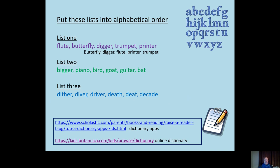Look at list two — a bit trickier because some words begin with the same letter. We've got bigger, piano, bird, goat, guitar and bat. When two words begin with the same letter, we go to the second letter. The answer is bat, bigger, bird, goat, guitar, piano. And if we still can't distinguish, we go further into the word to the third letter.